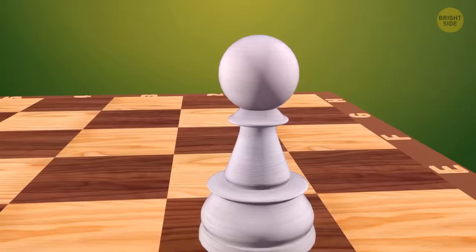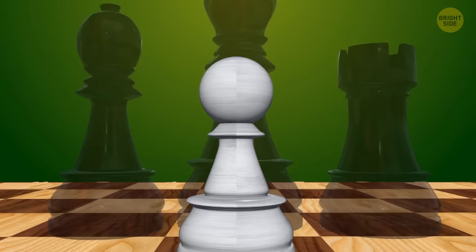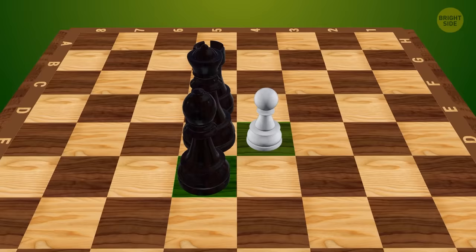Pawns are the only pieces that can't go backward. They can move only one square forward or two squares forward if it's their first move of the game. Still, don't let them fool you. These sneaky little guys can capture even the toughest pieces if you play them right. When a pawn captures one of your friend's pieces, it does it with a skillfully diagonal move, instead of just going forward.